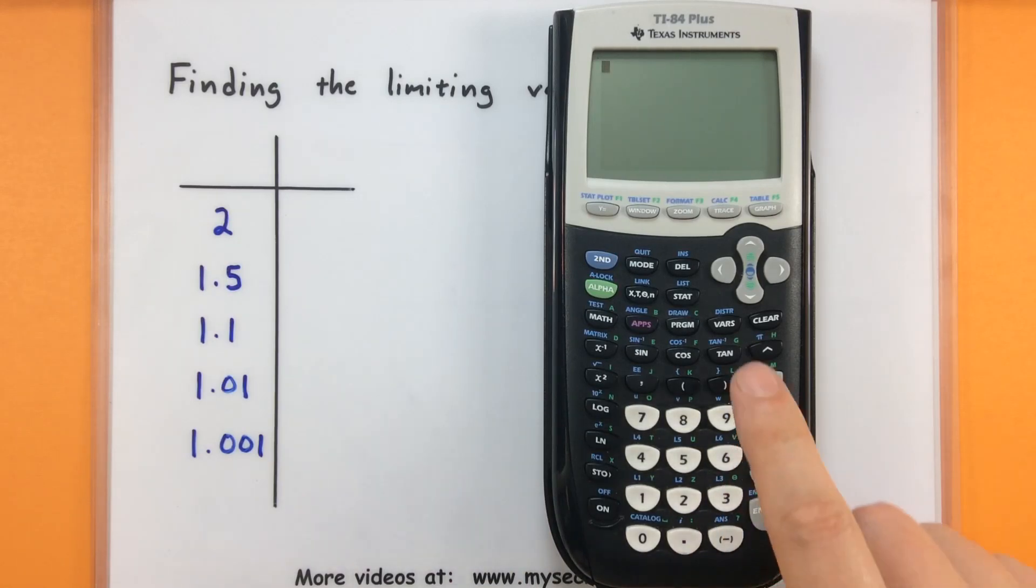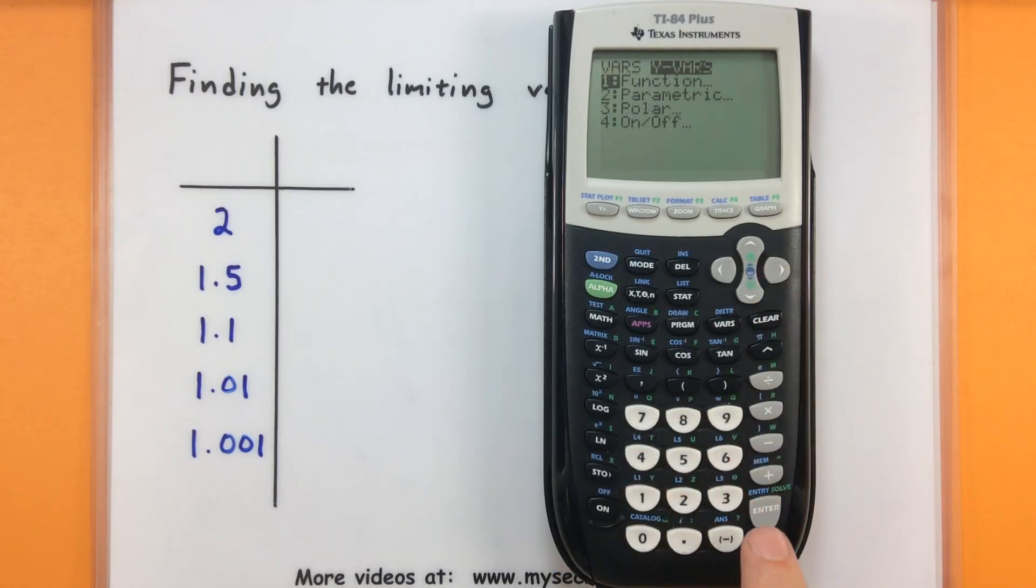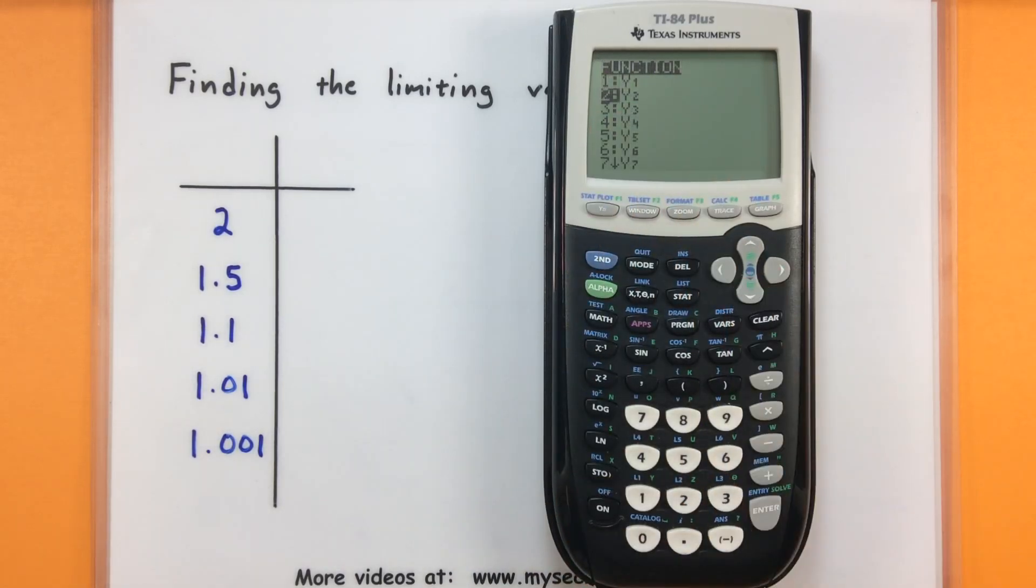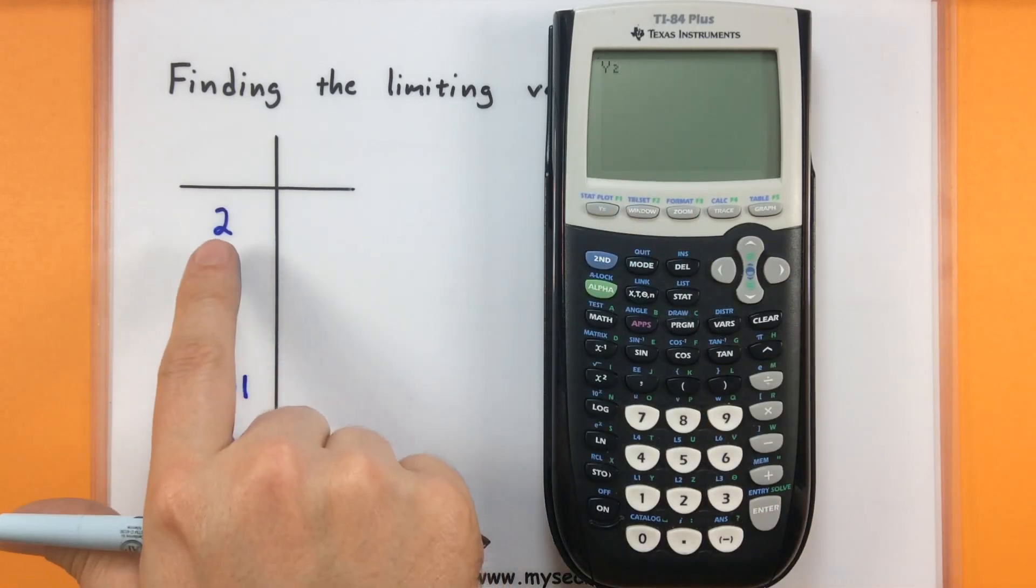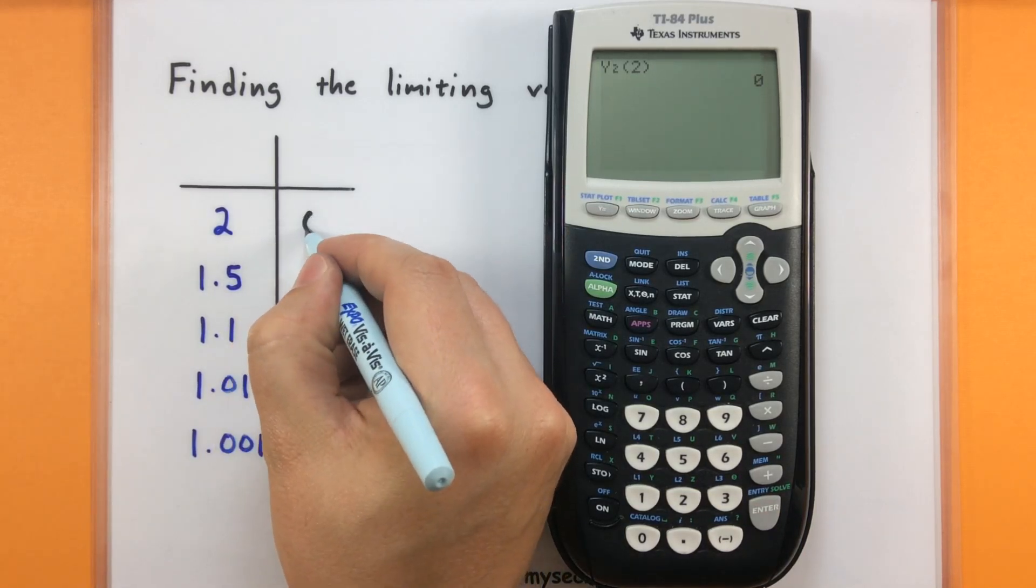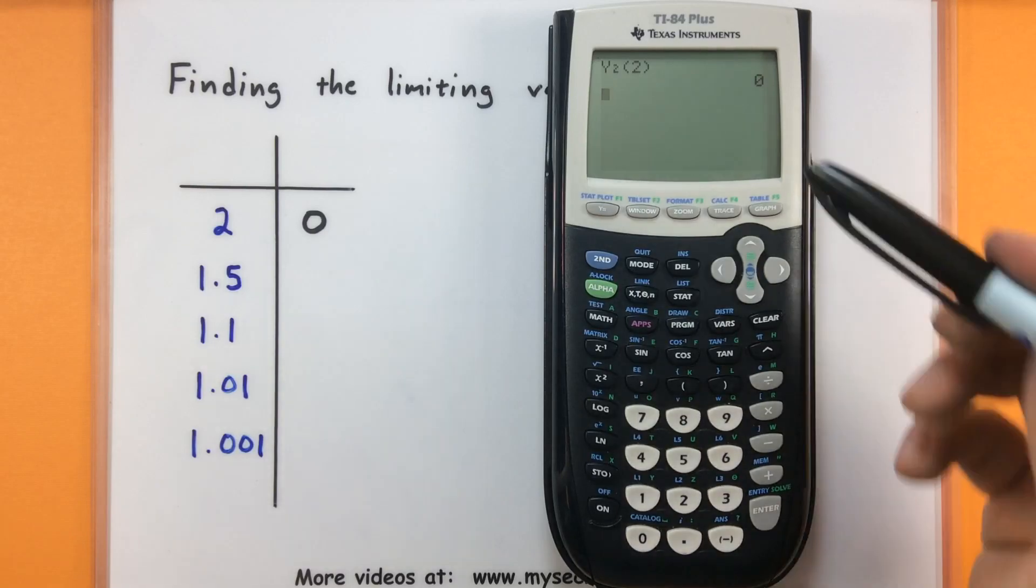So to feed in values into my slope formula now I need to go back into variables. Vars. Y variables. 1 for function. And we've stored that slope formula into y2. So I'm going to arrow down. Make sure y2 is selected. And then press enter. And it looks like the first value I'll feed it is 2. Make sure that when you feed it values that it's also encased inside parentheses. So let's press enter. And it looks like we get a value of 0. So what's that really mean? It means if I choose the point at 1 and I choose the point at x equals 2 and I find the slope between them, the slope is going to be 0.